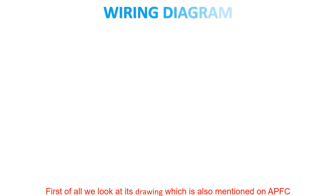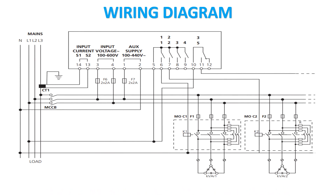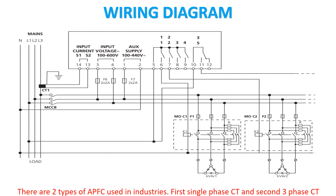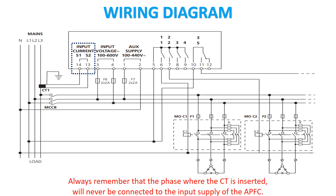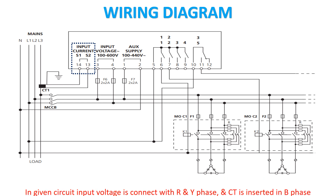First of all we look at its drawing, which is also mentioned on APFC. There are two types of APFC used in industries: first single phase CT, and second three phase CT. This model operates on single phase CT. Always remember that the phase where the CT is inserted will never be connected to the input supply of the APFC. In the given circuit, input voltage is connected with R and Y phase, and CT is inserted in B phase.